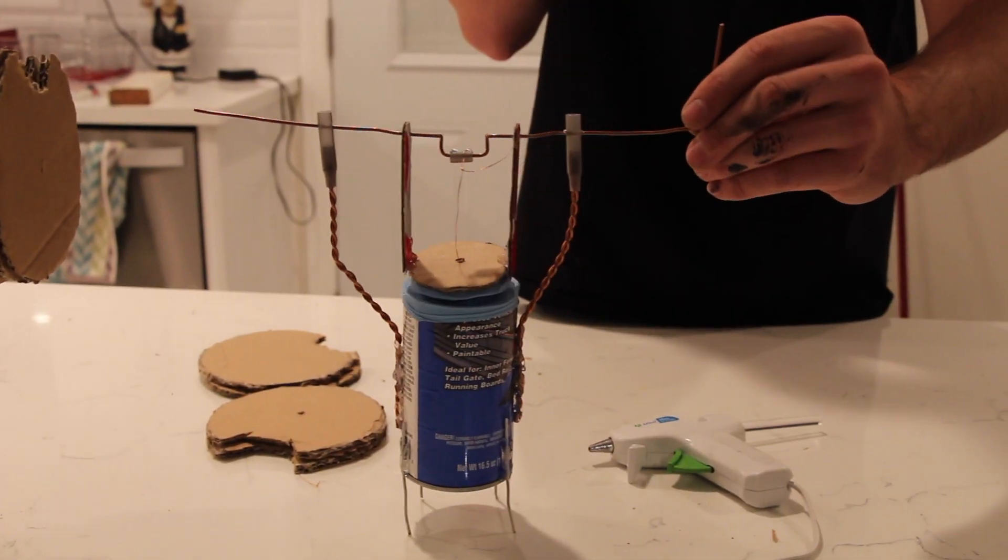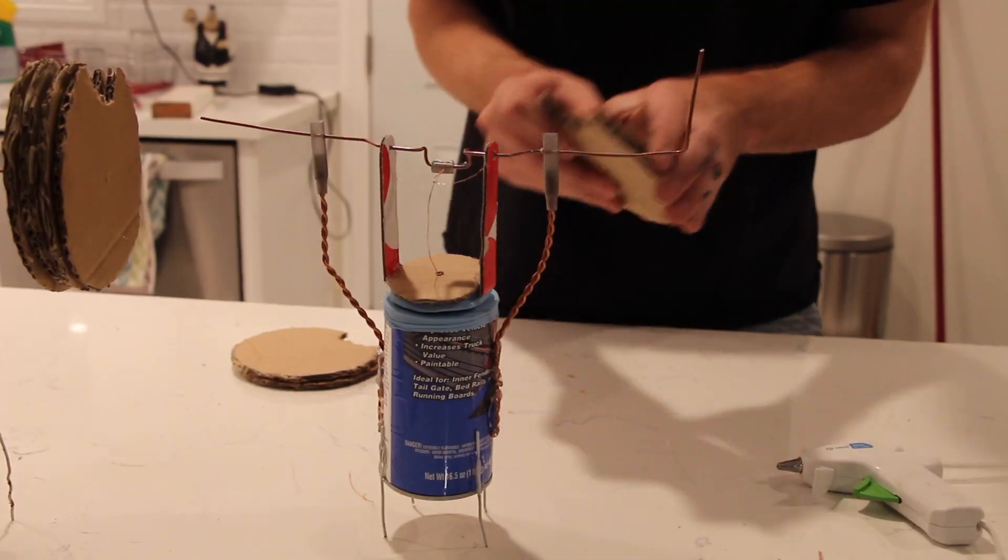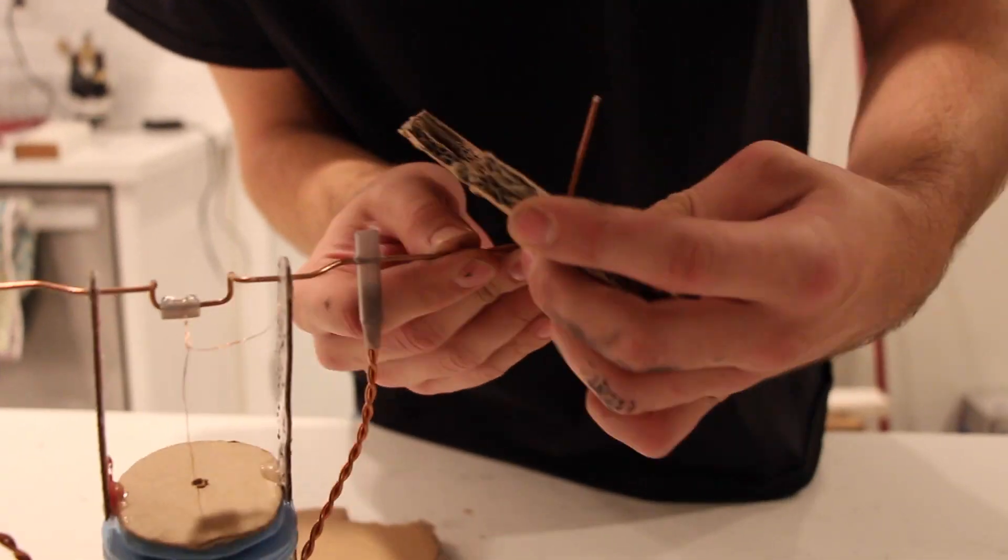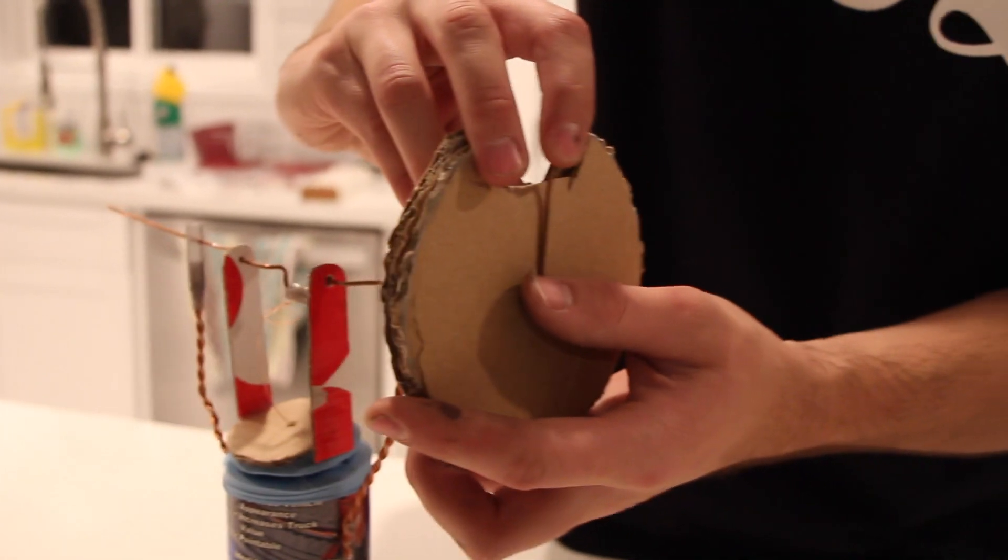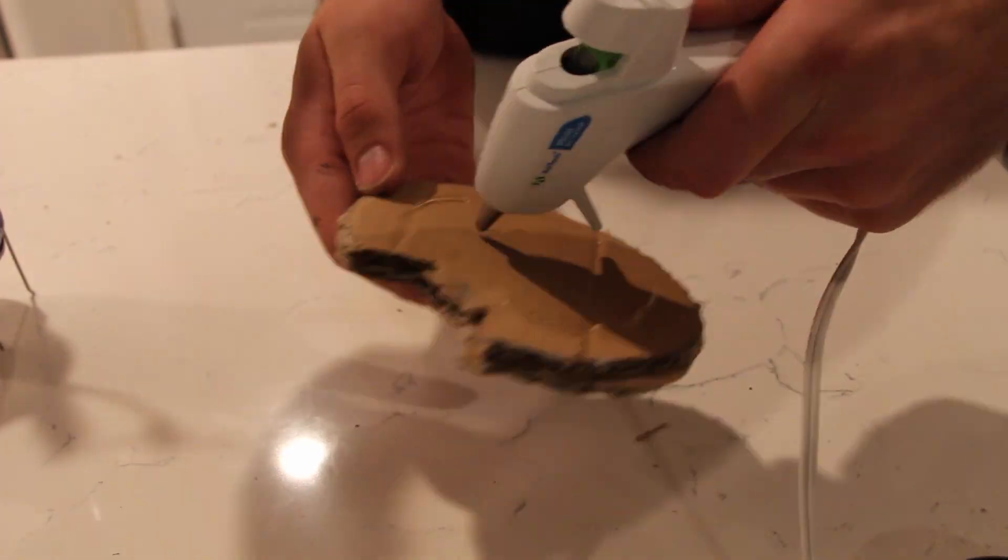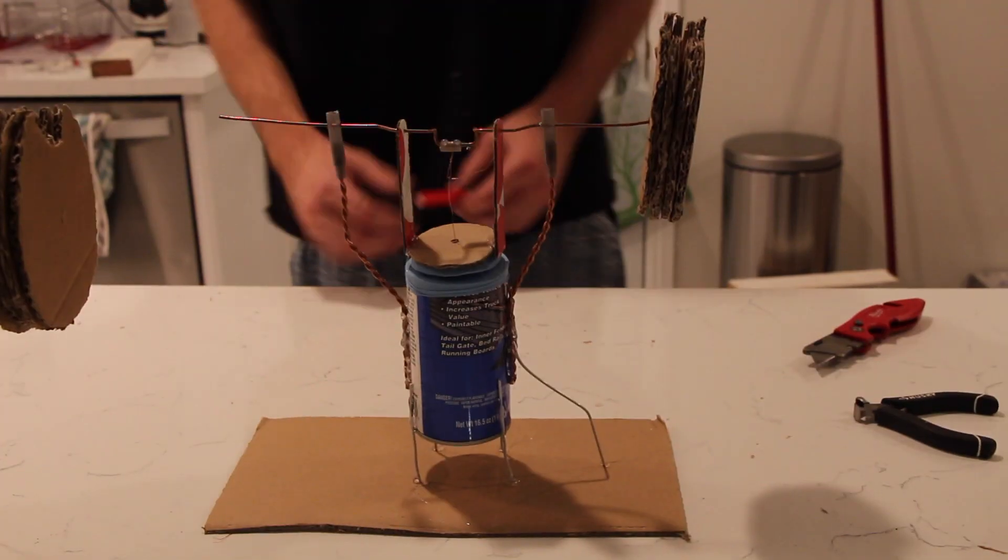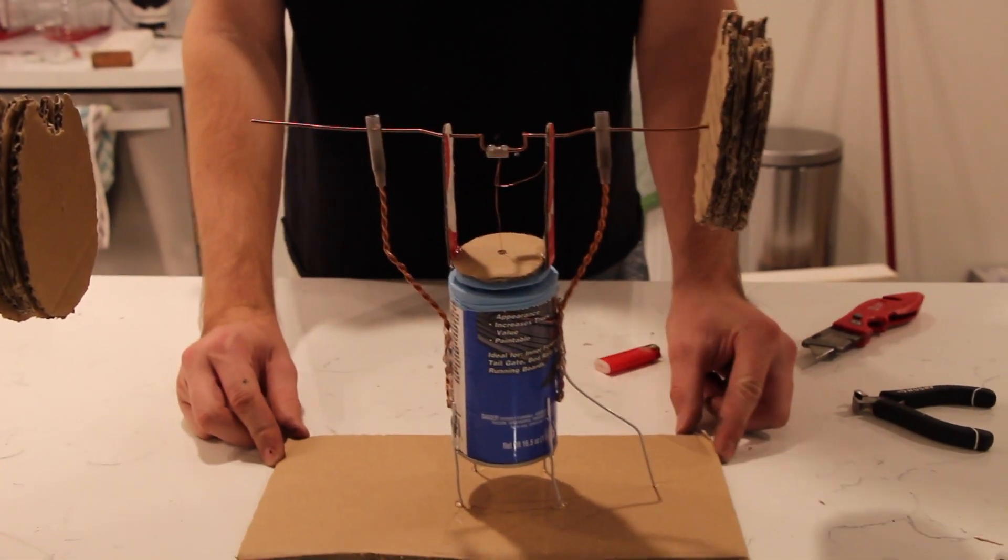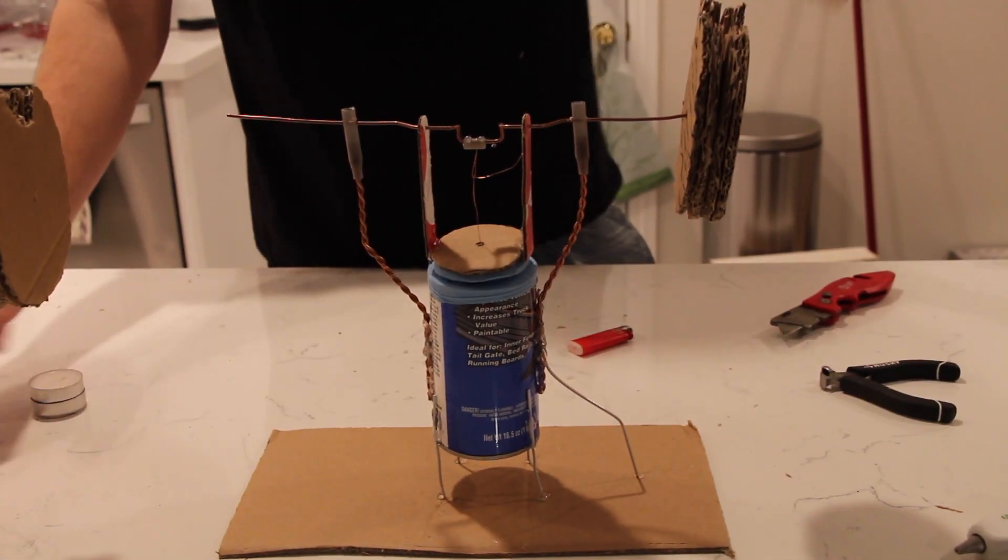Now we're going to put our flywheel on. I'm going to glue the crank. So this is the finished product. I tacked it down to a piece of cardboard. That's it, that's all it takes.